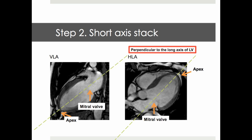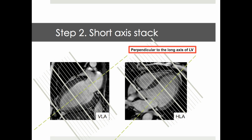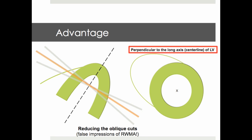The short axis stack is planned perpendicular to the long axis of the left ventricle. Therefore, we place a stack of short axis slices perpendicular to the imaginary line in the center of the ventricle. The obvious advantage of such a planning strategy is in reducing oblique cuts through the myocardium, which can give false impressions of regional wall motion abnormalities.